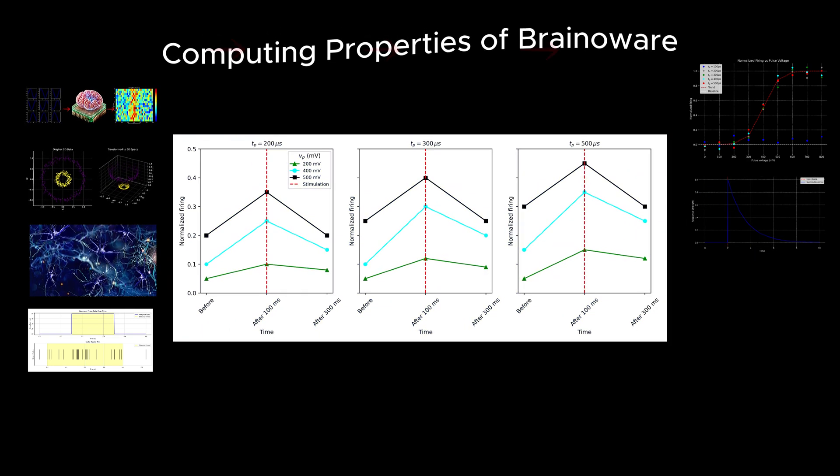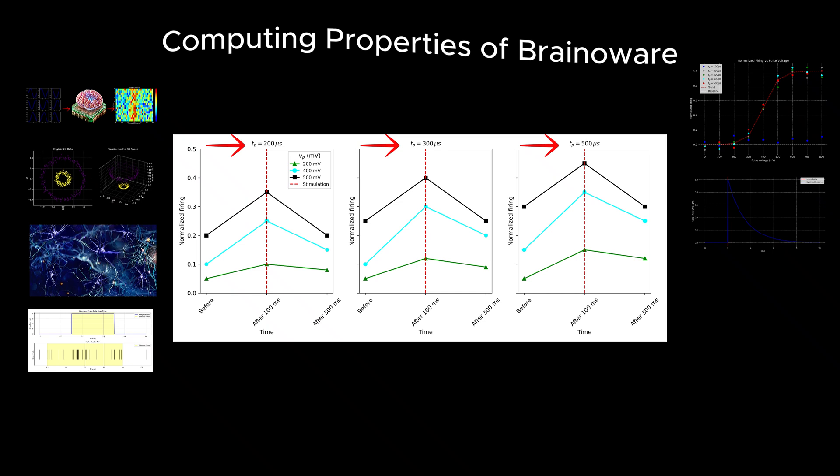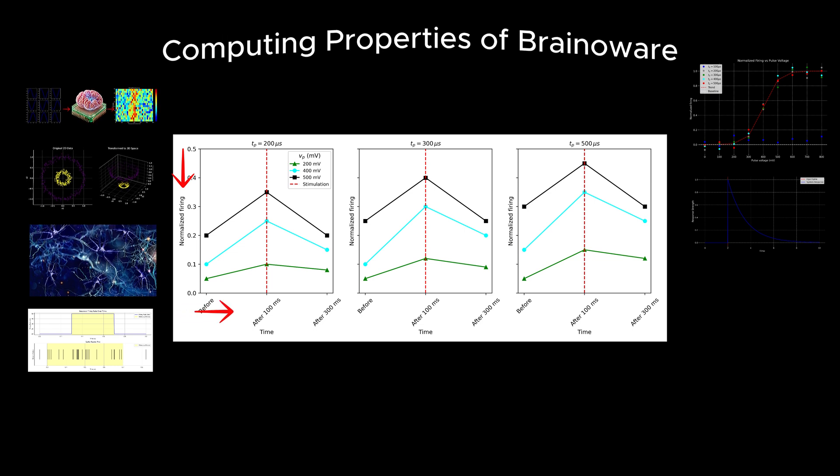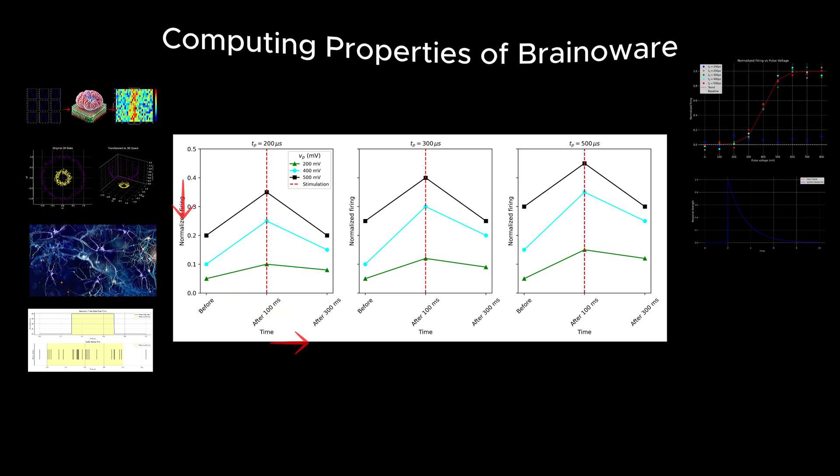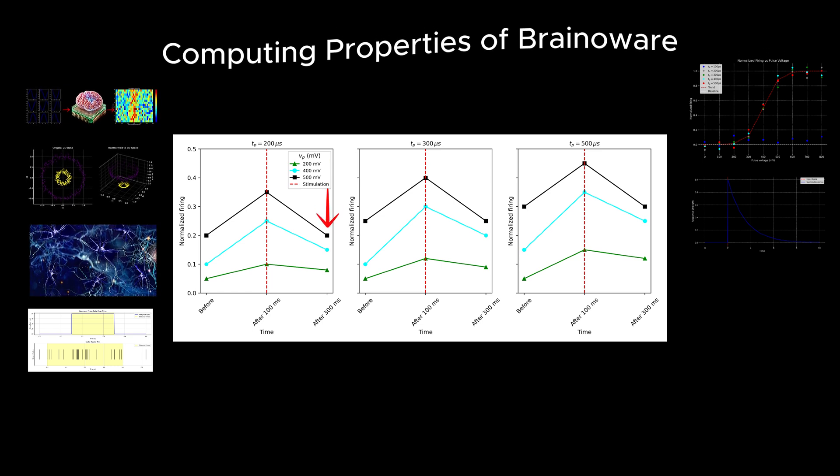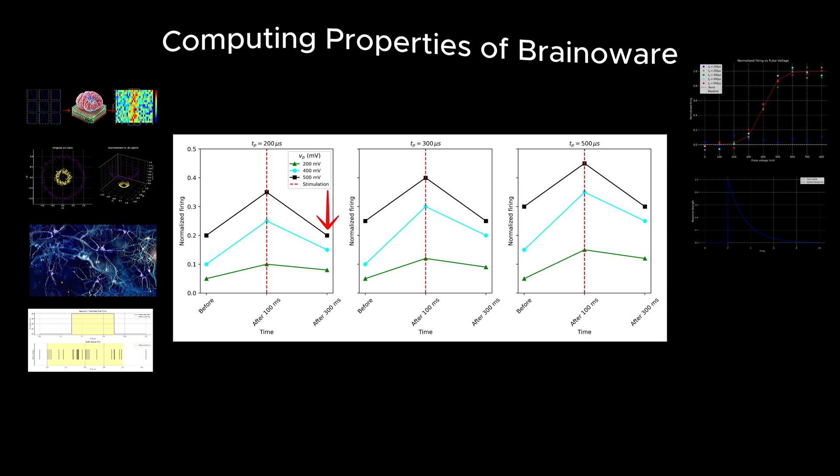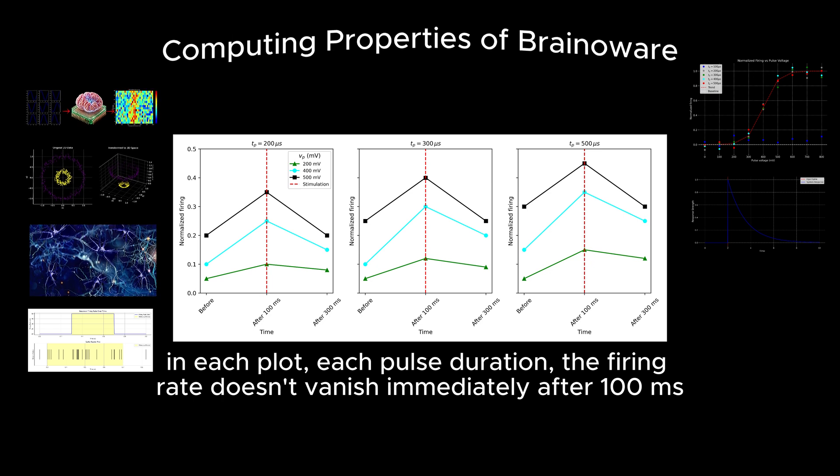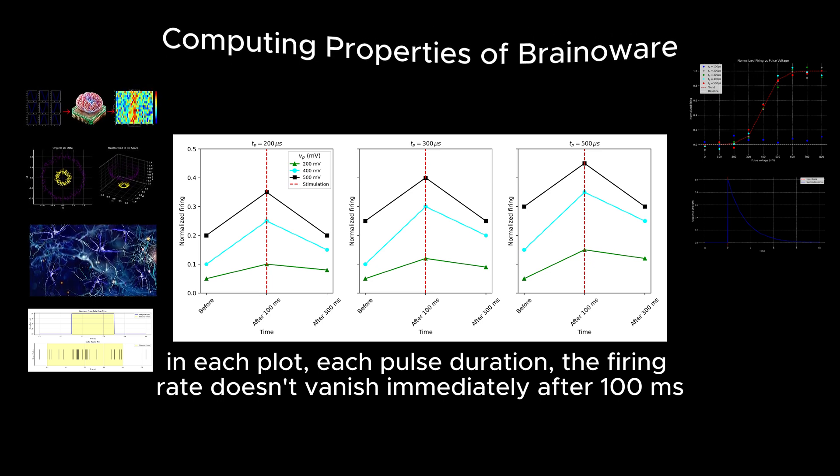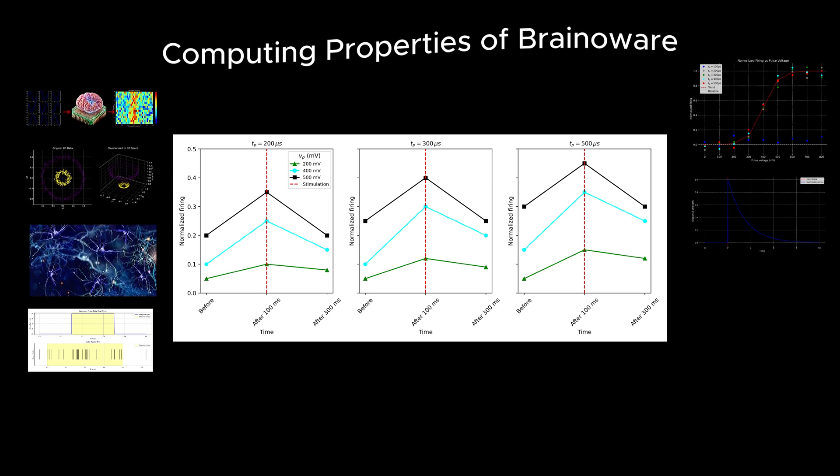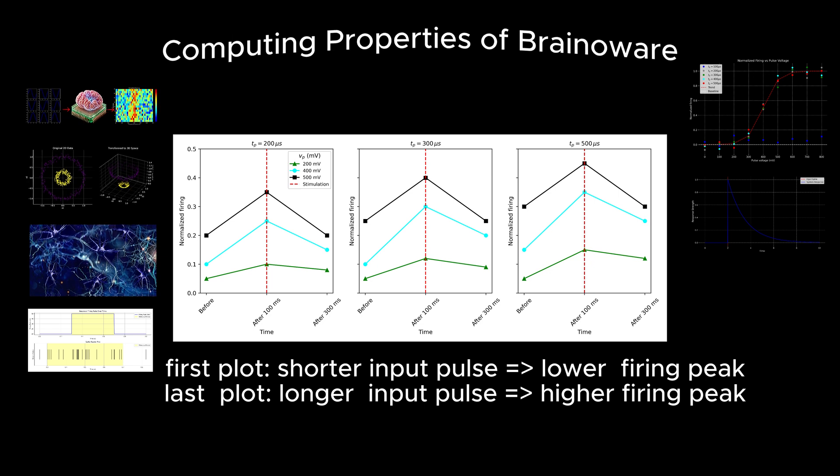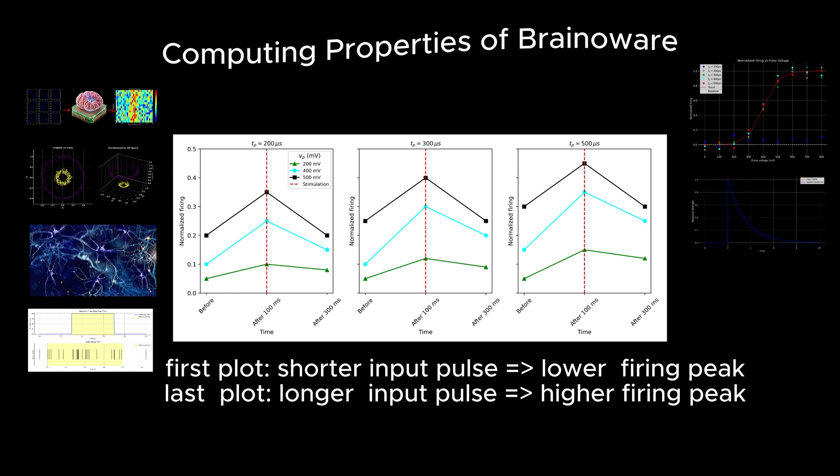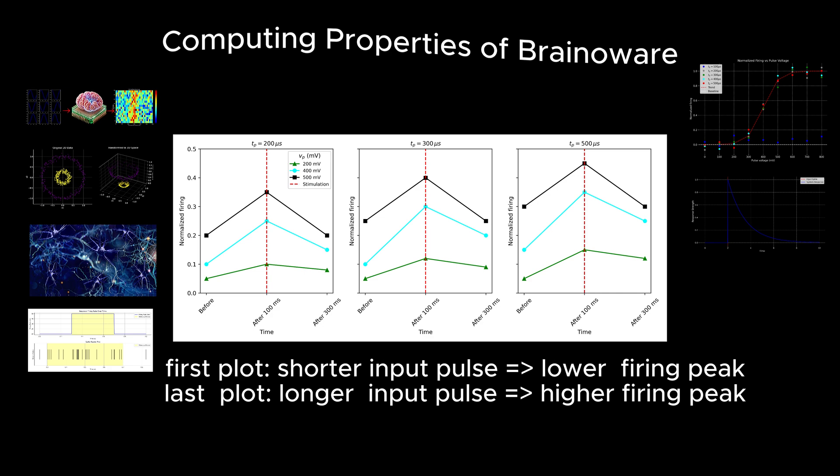To test fading memory, the researchers applied voltage pulses of varying durations and intensities to the brain organoids. They measured the firing rates immediately after the stimulation and at intervals of 100 milliseconds and 300 milliseconds afterward. The results showed that the firing rate decreased over time, demonstrating a gradual decay of the system's response to the initial input. This decay in firing rate reflects the system's fading memory, where the influence of the stimulus diminishes over time. The researchers also observed that the rate of this decay depended on the parameters of the stimulation. Longer and higher intensity pulses produced stronger initial responses and slower decay rates, indicating that the system's memory properties can be tuned by adjusting the stimulation.